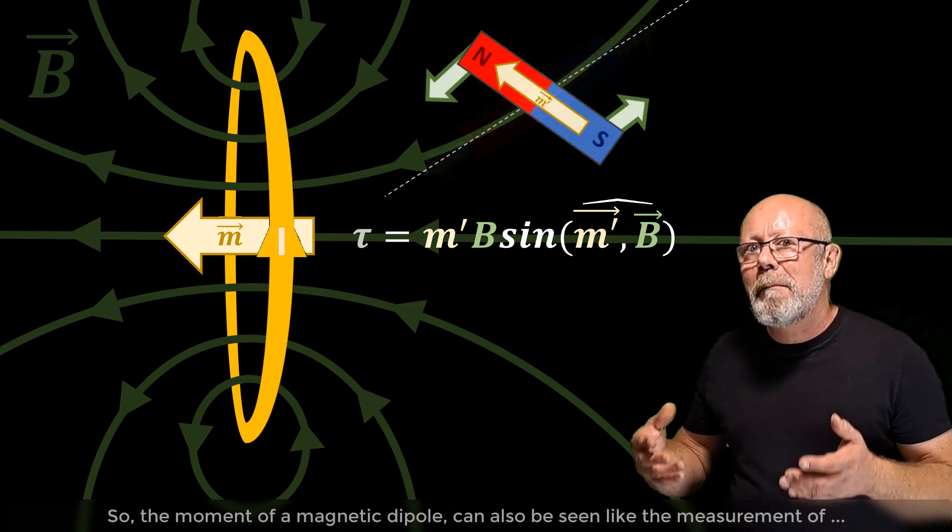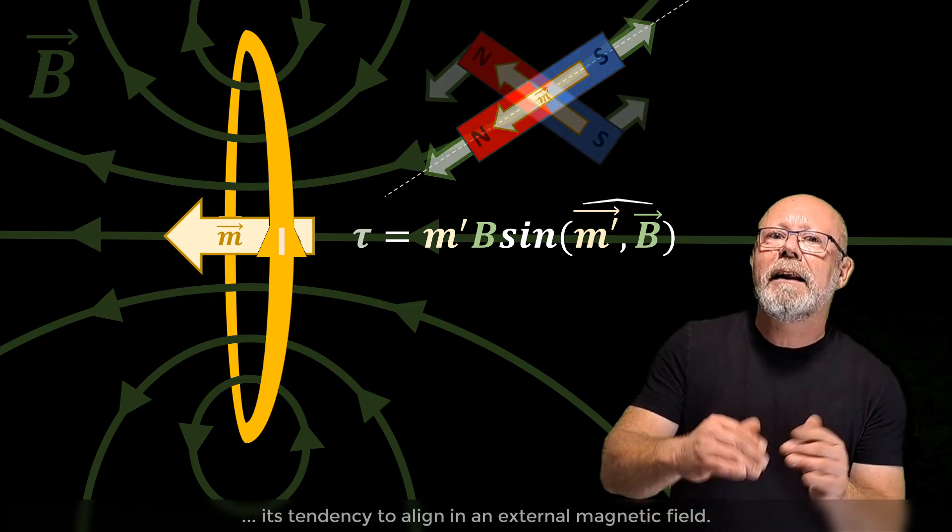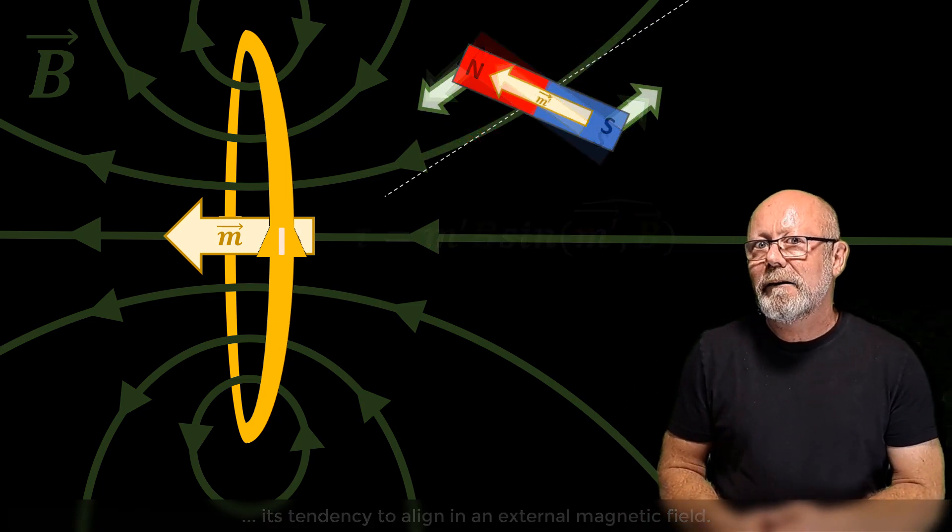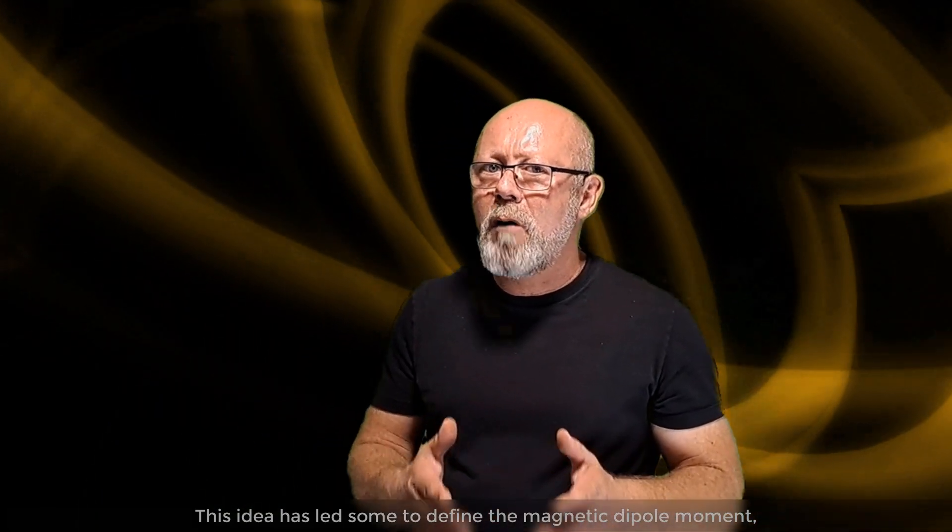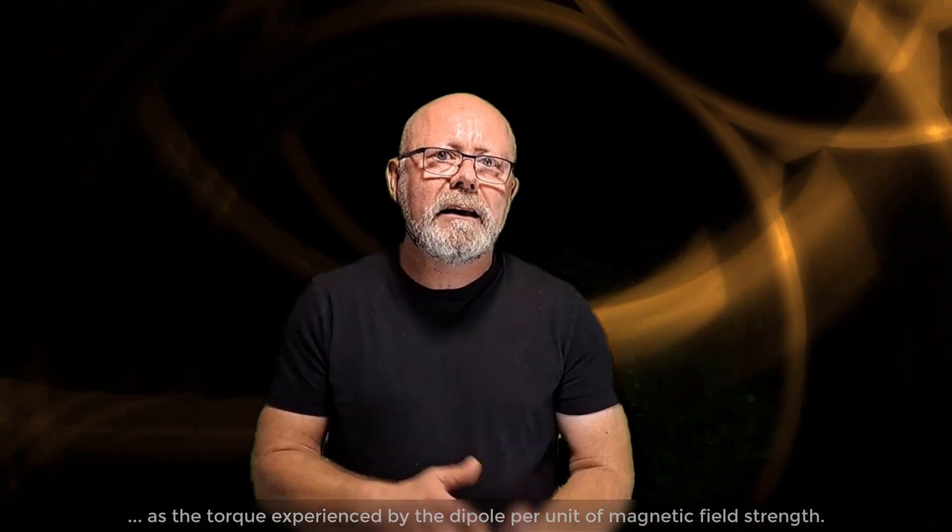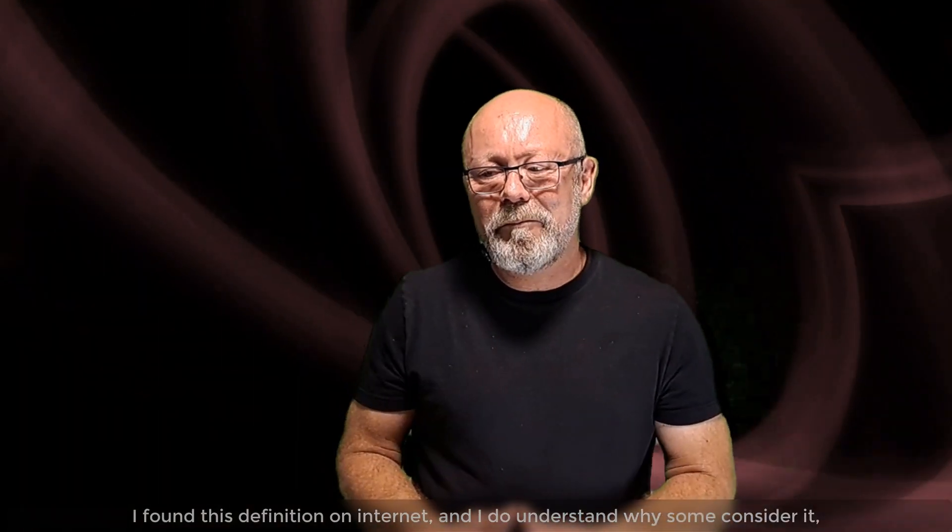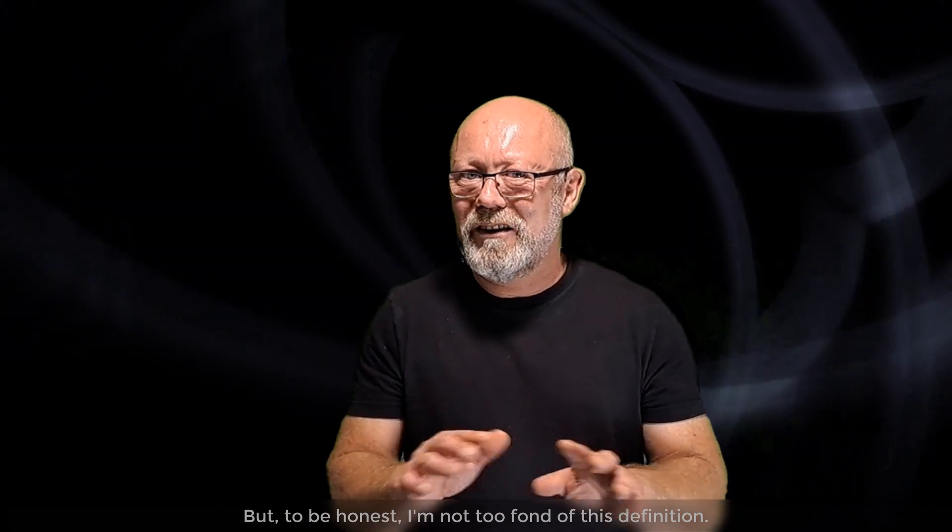So, the moment of a magnetic dipole can also be seen like the measurement of its tendency to align in an external magnetic field. This idea has led some to define the magnetic dipole moment as the torque experienced by the dipole per unit of magnetic field strength. I found this definition on the internet, and I do understand why some consider it. But, to be honest, I'm not too fond of this definition.